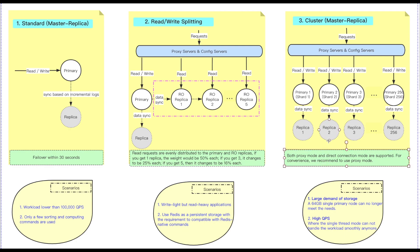Talking about connection, both proxy mode and direct connection mode are supported. For convenience, we recommend to use proxy mode. In addition, you can choose to set up a cluster with at least two shards or scale to a maximum of 256 shards for a total of 1496 gigabytes. This is pretty much cool.